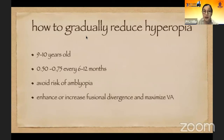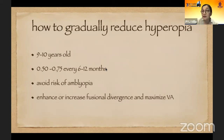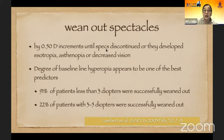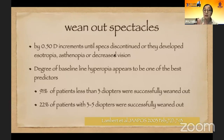How do we gradually reduce hyperopia? We have to take into consideration the amblyogenic age. In my practice, I would usually reduce the hyperopia correction gradually at around nine to ten years old, by around 0.5 to 0.75 diopters every six to twelve months, to enhance fusional divergence and maximize visual acuity. In a study by Lambert, spectacles were weaned out by gradually decreasing hyperopia by 0.5 diopter increments until spectacles were discontinued, or until the patient developed isotropia, anisopia, or decreased vision. When weaning out the hyperopia correction, you must stop if isotropia, anisopia, or decreased vision develops.